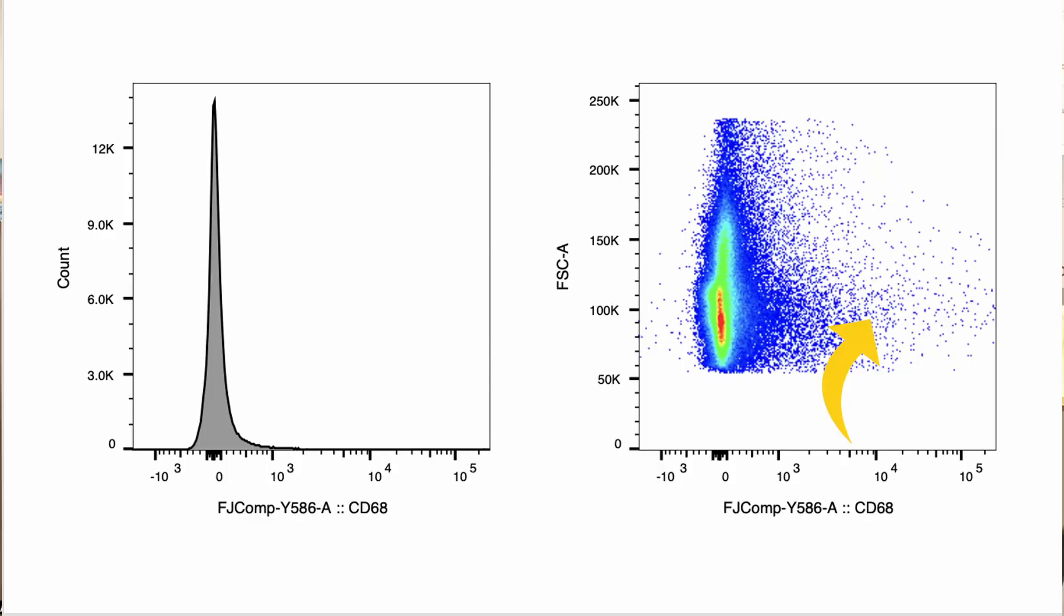But if you flip that over onto a dot plot, you can see it's really quite obvious where those events are occurring, where the positivity is and where you would set your gates. But also there is a lot more there than you would think there is on the histogram.